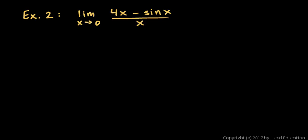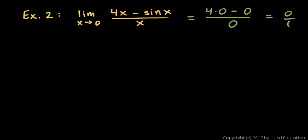Here are a couple of additional examples of limit problems that we will solve with L'Hôpital's rule. Example two: the limit as x approaches 0 of (4x minus sine of x) over x. If we substitute 0 in, we get 4 times 0 minus sine of 0, which is 0, over 0 — that's an indeterminate form, so we can't evaluate it by simple substitution.